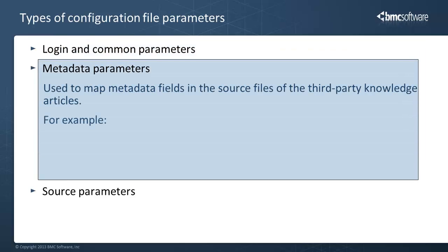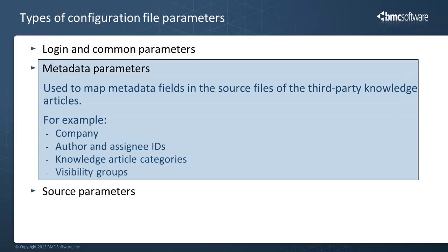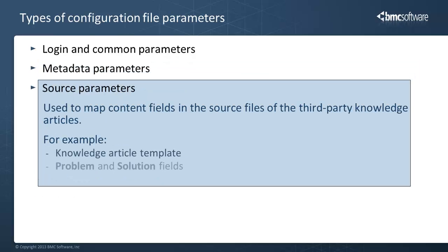The metadata section contains parameters that are used to map metadata information in the source files of the articles, such as the name of the company that uses the knowledge articles, the names of the article author and assignee, and categorization information. The source section contains parameters that are used to map content-related information, such as the problem, solution, and template fields in the source files of the third-party articles.